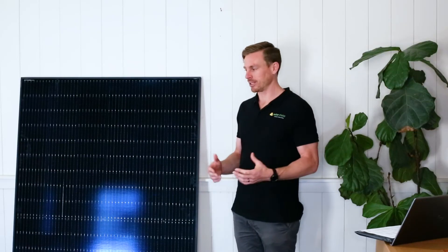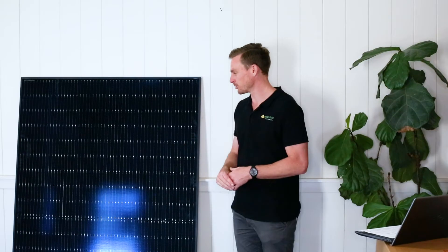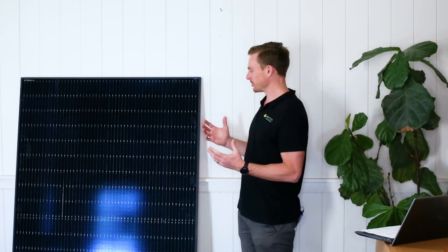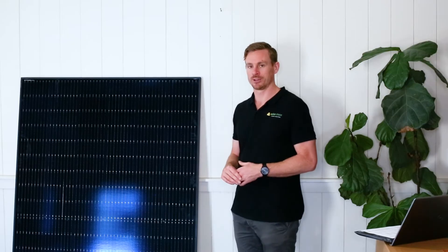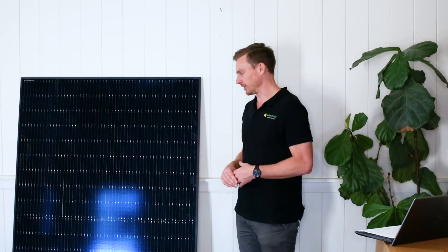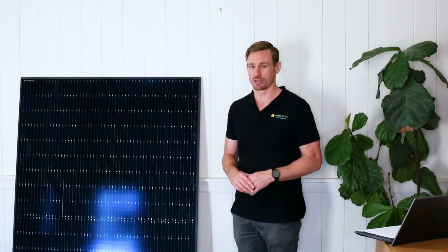The panel features 108 half cut solar cells. So what that means is there's 54 cells that have been chopped in half and then glued back together in this panel. And that process improves the efficiency and output of the panel, but also improves its resilience to shading. And that's the technology that we now see available on most solar panels.